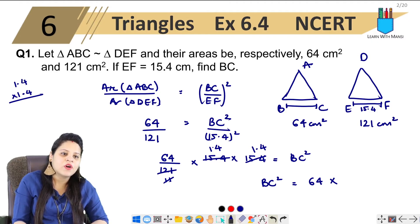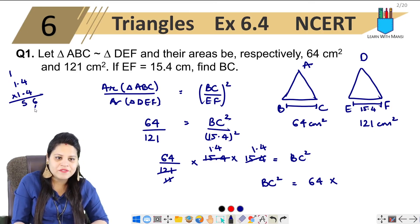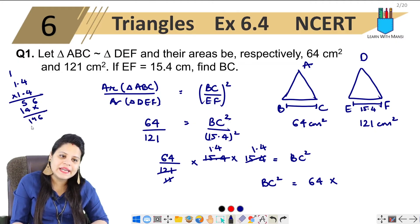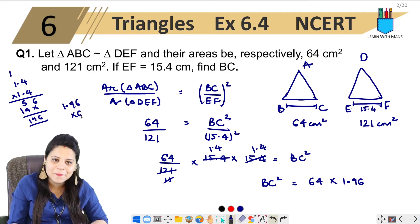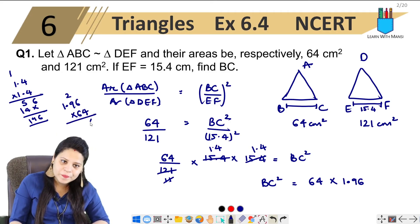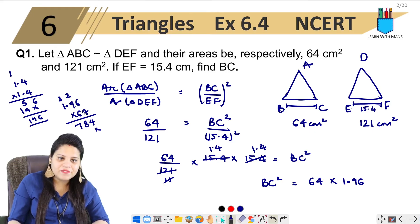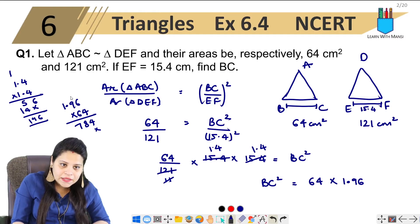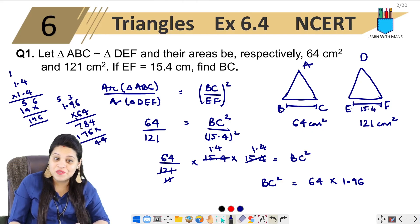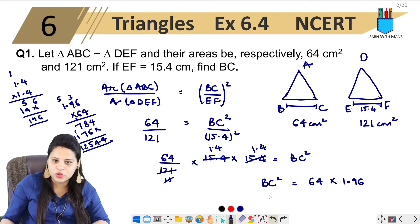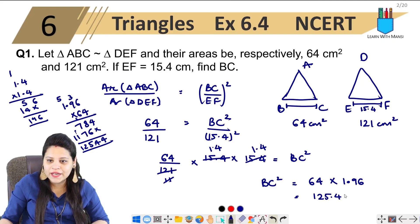Now we multiply: 1.4 into 1.4 equals 1.96. Then BC squared equals 64 multiplied by 1.96. Calculating 64 times 1.96 gives 125.44. So BC squared equals 125.44.